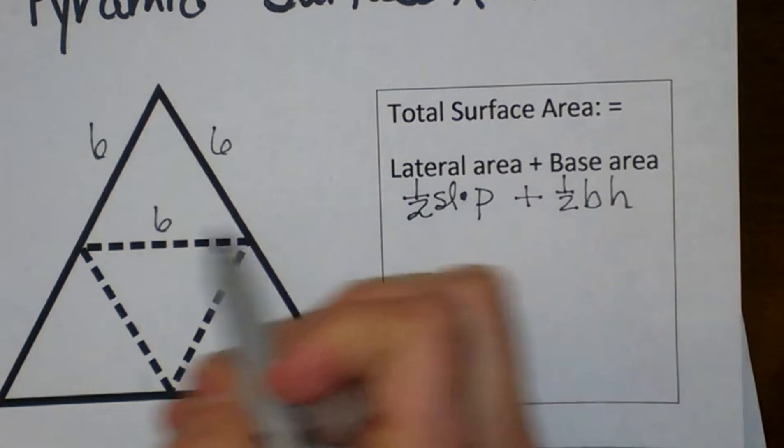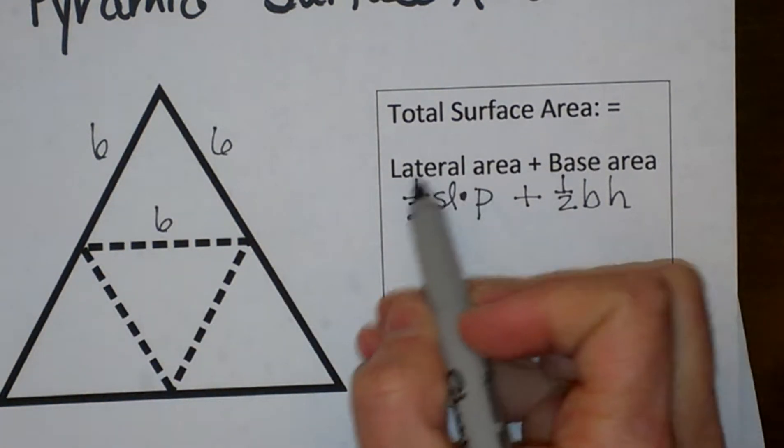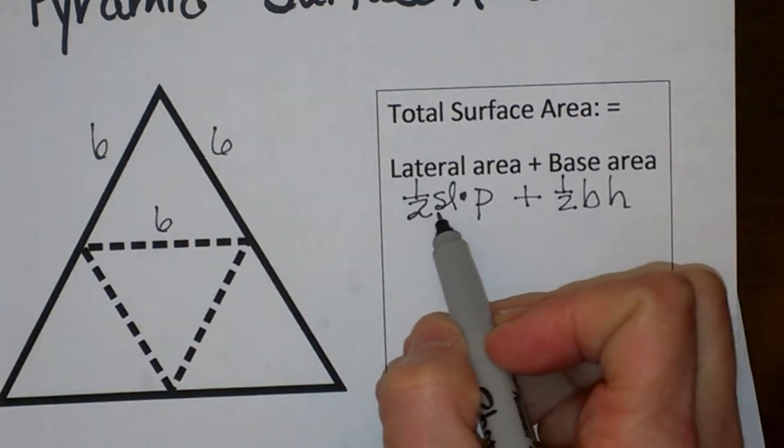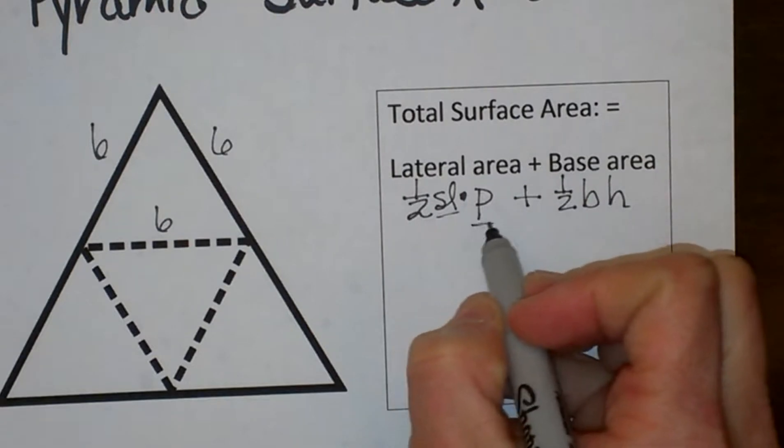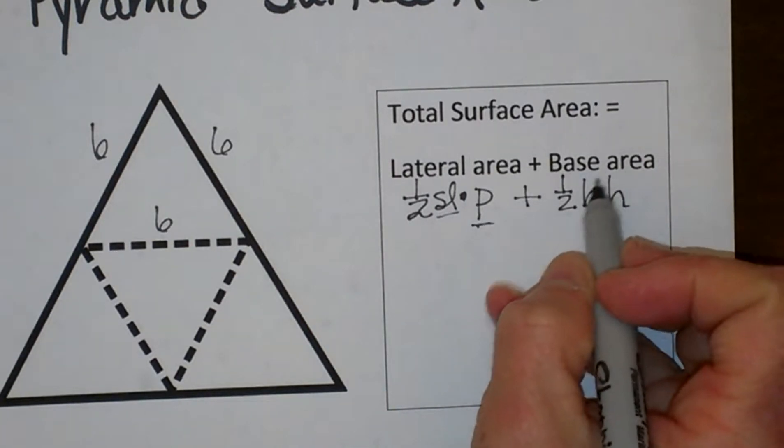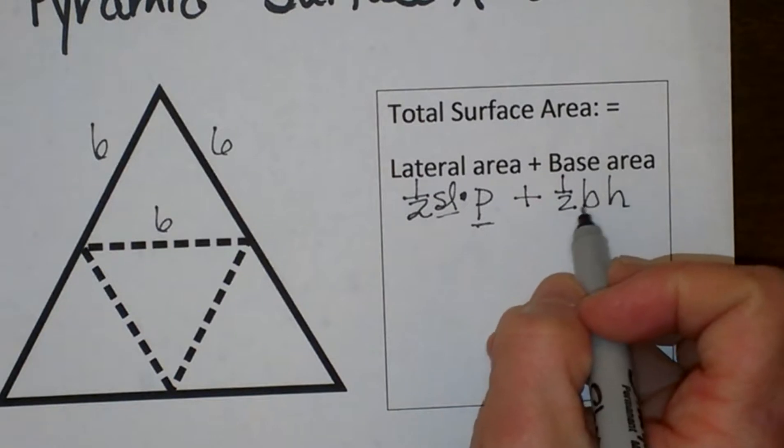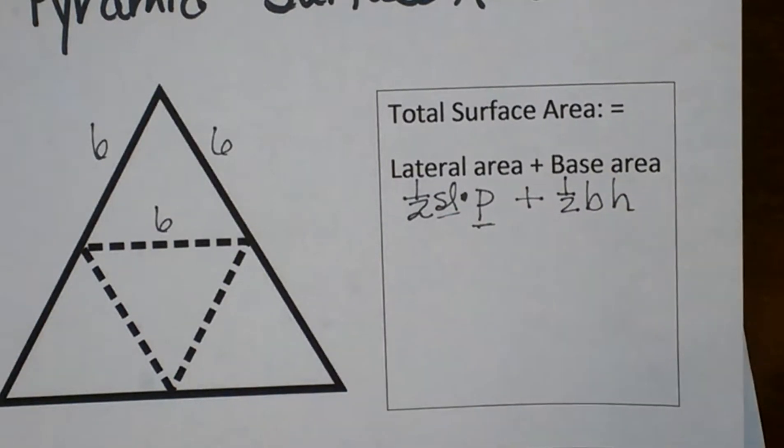The first one is to look at the formula. We are going to do one half the slant height times the perimeter and then we are going to add the base area, in this case our base is a triangle, and we are going to add all that together.